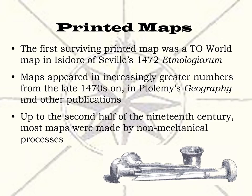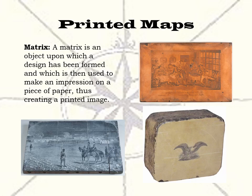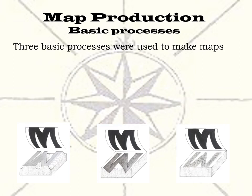Up to the second half of the 19th century, almost all maps were made by non-mechanical processes. All printed maps were printed from a matrix — an object upon which a design has been formed and which is then used to make an impression on a piece of paper, thus creating a printed image. A matrix can be made from wood, called a block; metal, called a plate; or from a lithographic stone. For the maps we will be considering, all the matrices were made non-mechanically, that is, by hand.